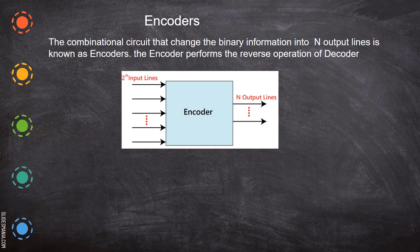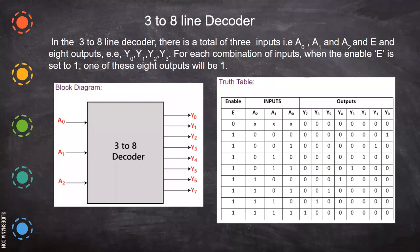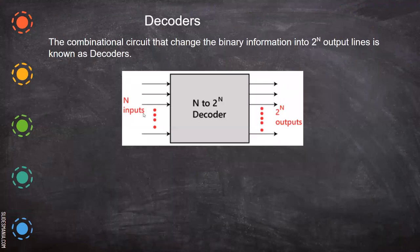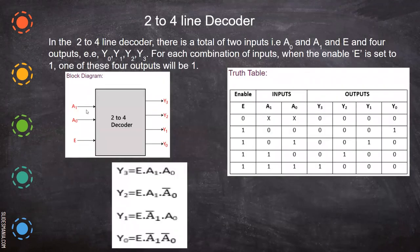An encoder is the reverse or inverse of a decoder. In a decoder, there are n inputs and 2-power-n outputs. For example, a 2-to-4 decoder has 2 inputs and 2-power-2, which is 4 outputs. When the enable signal is 1, the two inputs have their effect, activating the corresponding output line.